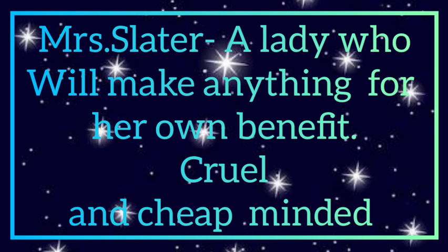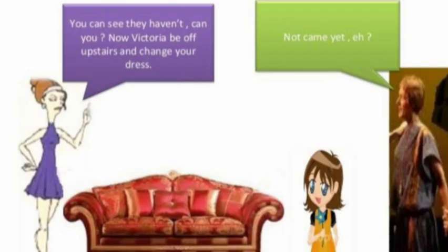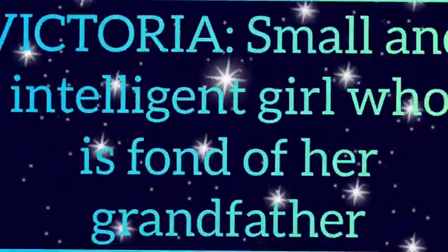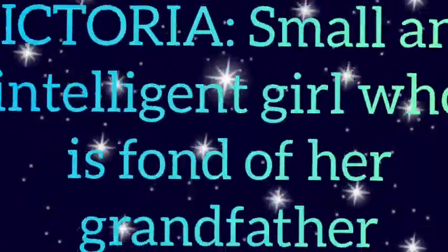She looks out of the window and calls her daughter Victoria, asking her to dress in black as a symbol of sorrow, because she never wanted her daughter playing joyfully in the streets when her grandfather had passed away. She also orders Victoria to get ready before her Aunt Elizabeth and Uncle Ben arrive. Victoria, being a small girl, raises the question of why her aunt and uncle were coming, as they had not visited them for past years.